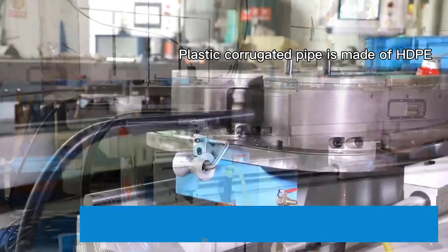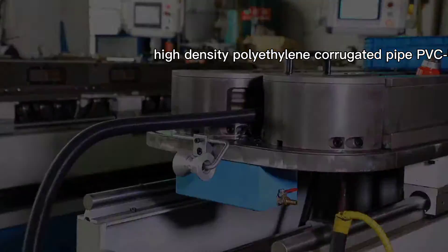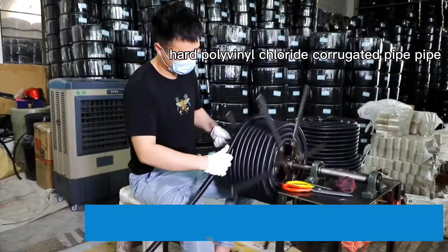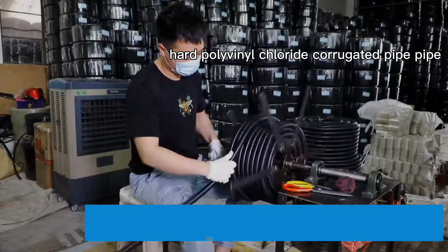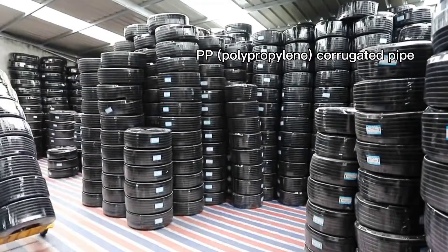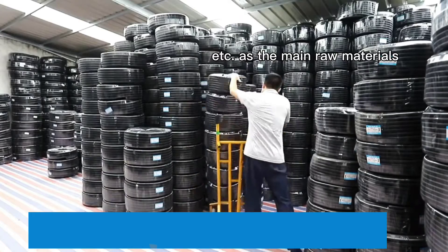Plastic corrugated pipe is made of HDPE (high-density polyethylene corrugated pipe), PVCU (hard polyvinyl chloride corrugated pipe), PP (polypropylene corrugated pipe), etc. as the main raw materials.